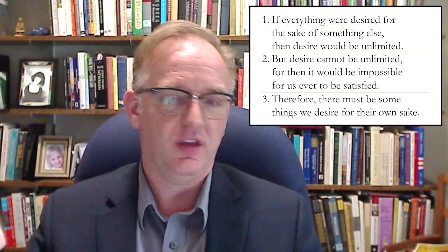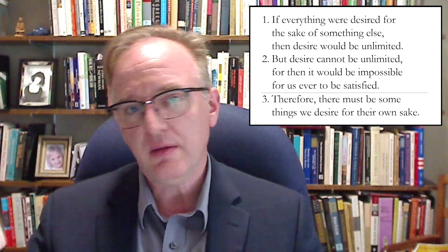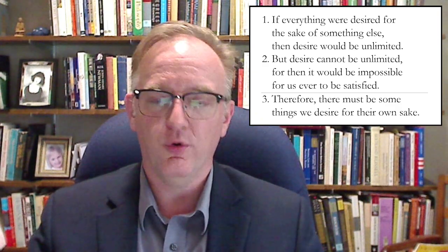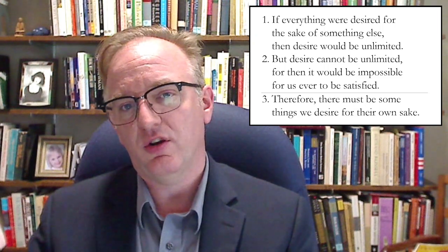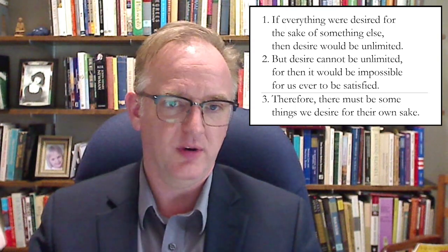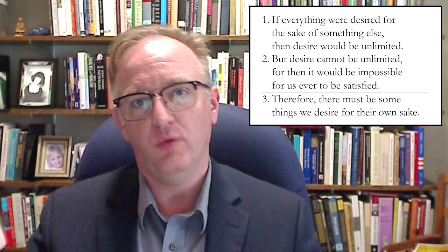We might use the following form to represent Aristotle's argument. Premise one: if everything were desired for the sake of something else, then desire would be unlimited. Premise two: but desire cannot be unlimited, for then it would be impossible for us ever to be satisfied. Conclusion: therefore, there must be some things we desire for their own sake. In representing an argument this way, the horizontal line under premise two is like the line above the solution to an arithmetical problem — it distinguishes what we get out of the argument (outputs) from what goes into it (inputs).